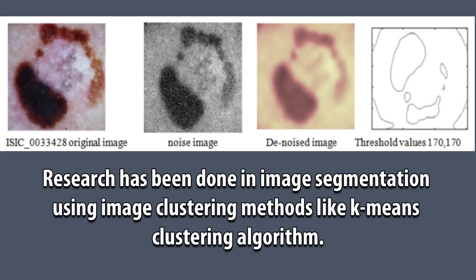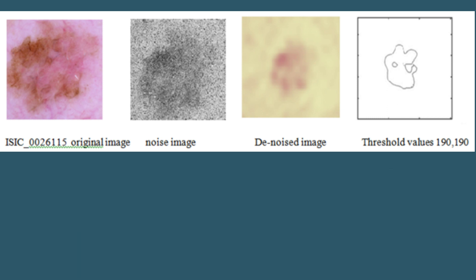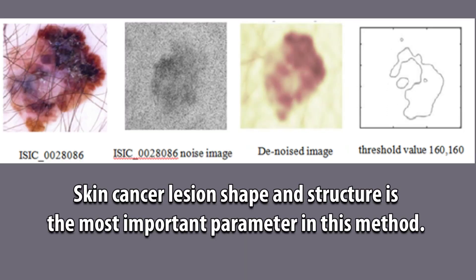Research has been done in image segmentation using image clustering methods like K-Means Clustering Algorithm. The approach describes skin cancer image segmentation based on symmetrical threshold contour algorithm with similar thresholding values for segmentation of the accurate cancerous lesion. Skin cancer lesion shape and structure is the most important parameter in this method.